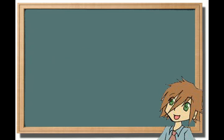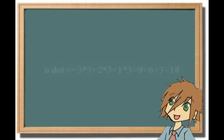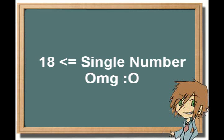For example, if u equals 3, 2, 1, and v equals 3, 3, 3, then u dot v will equal 3 times 3 plus 2 times 3 plus 1 times 3, which ends up being 9 plus 6 plus 3, which adds up to 18. As you have noticed, the dot product is a single number. This is important for other things, but we won't be going over those.